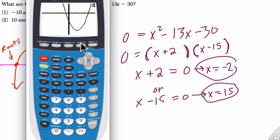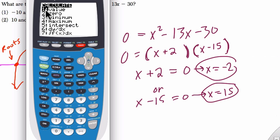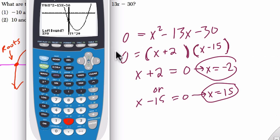If I hit second trace here, and I want to know the zeros or the roots, I hit choice 2. Then I just go to the left and the right of each root and hit enter. So it wants a point to the left of our root, enter. Point to the right of our root, enter. Then it's going to ask us to guess. And there's our first root, negative 2, 0. Then I repeat the process.